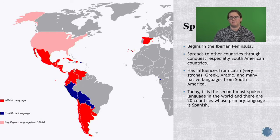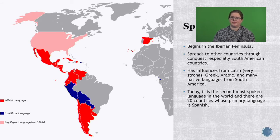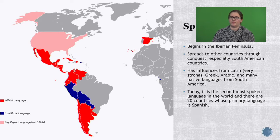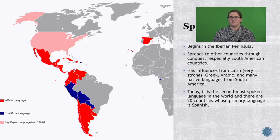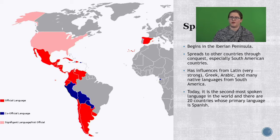Spanish begins in the Iberian Peninsula, which is where Spain is on the upper right side of the map. Spain also had some conquests and started moving around the world, so it spread to other countries, especially in South America. Spanish, as mentioned, has strong influence from Latin, Greek, Arabic, and a lot of the native languages of South America. It is actually the second most spoken language in the world, and there are about 20 countries whose primary language is Spanish.